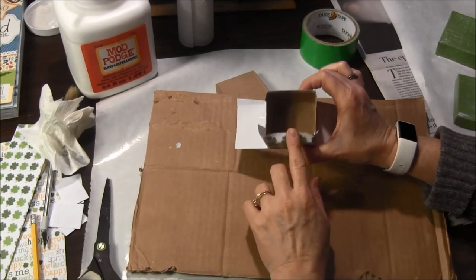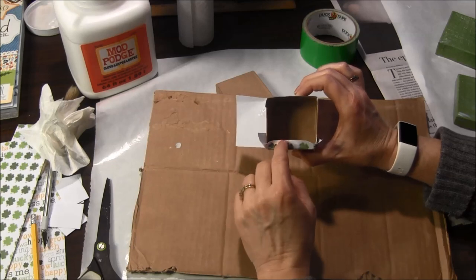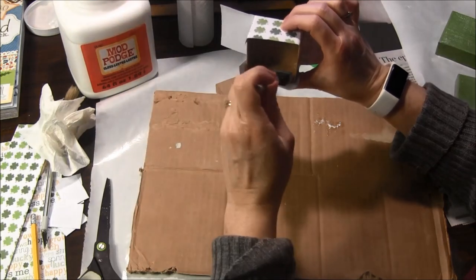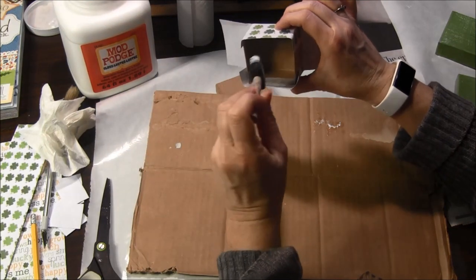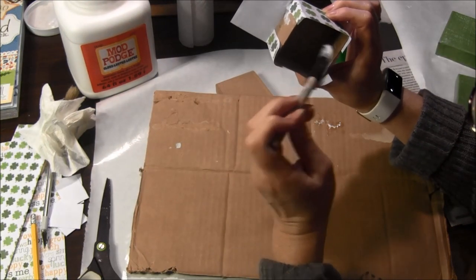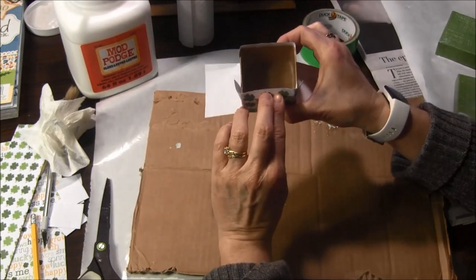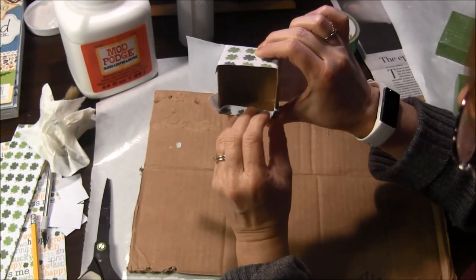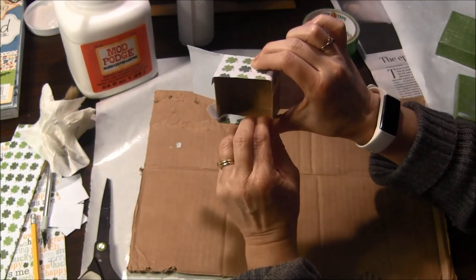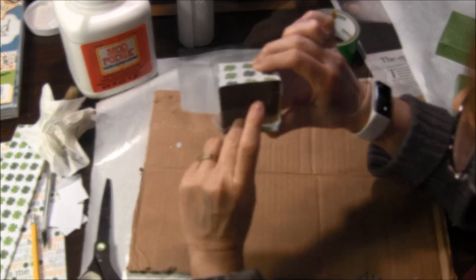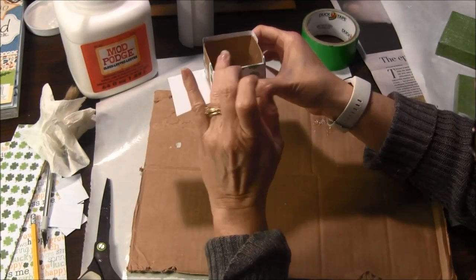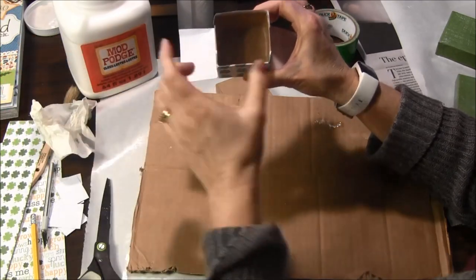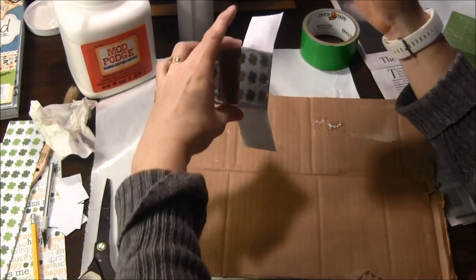Next, I want to fold this edge underneath and wrap it inside a little bit. So I'm going to take a little bit of Mod Podge and put it on the inside edge where it should be wrapping around. And then carefully wrap this around. It should wrap inside nicely so it's nicely smoothed out and wrapped around.